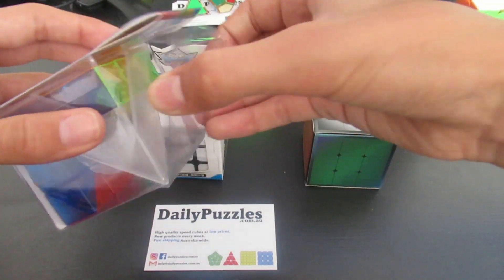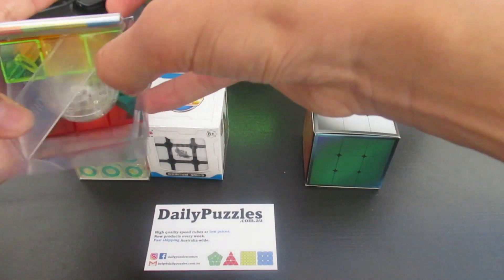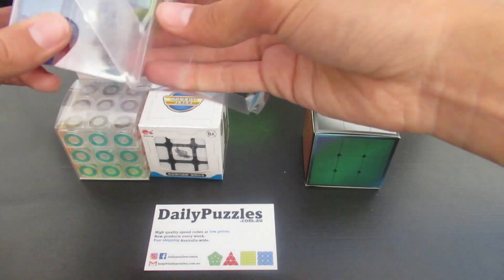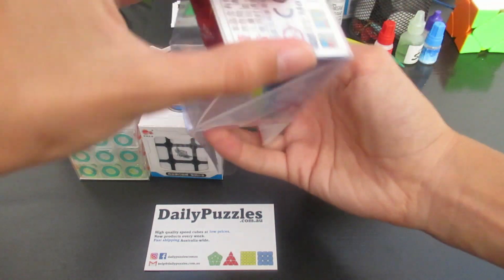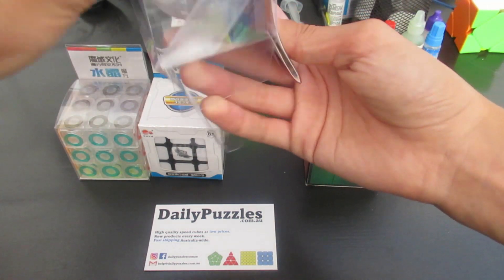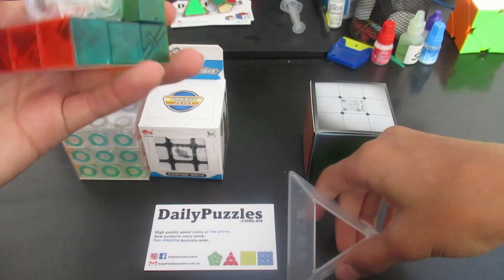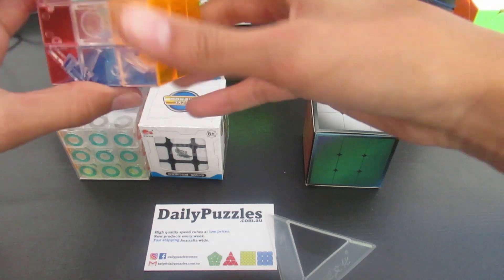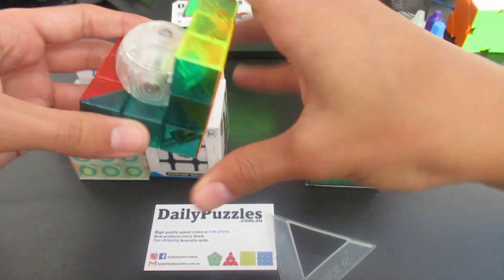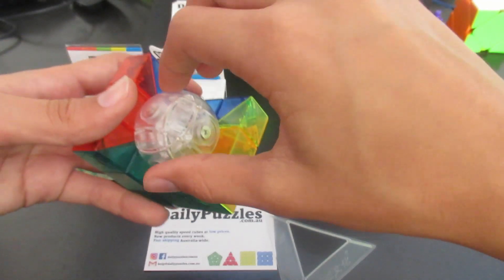So we'll start with this one. This looks very interesting. Alright, let's open it up. It's gonna come out. There we go. Alright, so this is, it seems to be like half a 3x3 with of course these pieces missing.